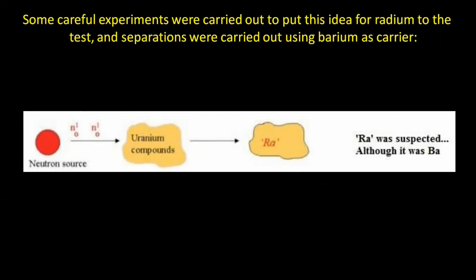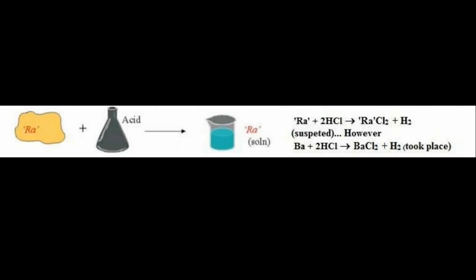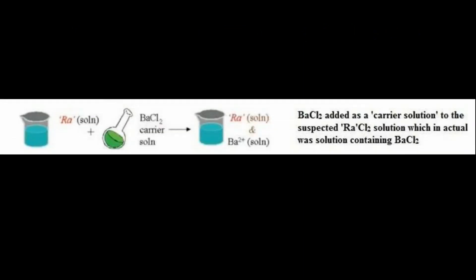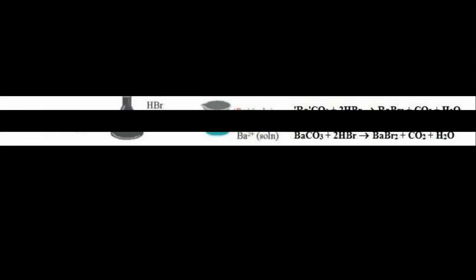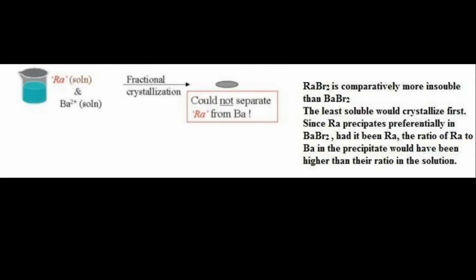Radium was suspected as a result of neutron bombardment of uranium. It was then treated with an acid — for instance, HCl — to obtain the corresponding chloride. Barium chloride was then added as a carrier solution to the assumed radium chloride solution, which was actually barium chloride. This solution, thought to contain both radium and barium ions, was made to react with carbonic acid to obtain radium and barium carbonates. Hydrogen bromide was then added to obtain their corresponding bromides. The final step was fractional crystallization to separate barium carrier from the suspected radium.